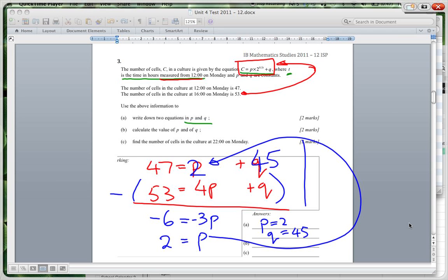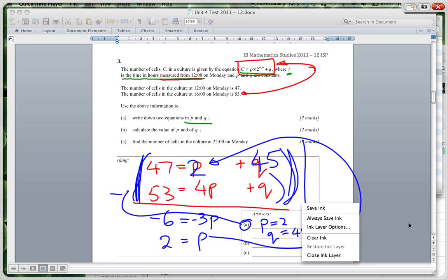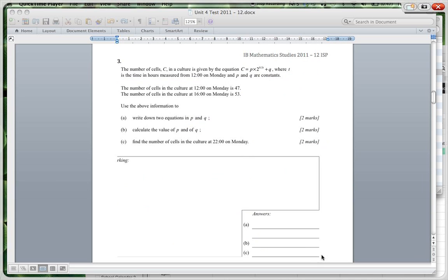So I've actually done both of this. The answer to A is actually this over here, our two equations. And then the answer to B is P equals 2, Q equals 45. And then find the number of cells in the culture at 2200 hours on Monday. Well, we would just substitute it in because now we're going to have C equals 2 times 2 to the 0.5T plus 45. That's our new equation.